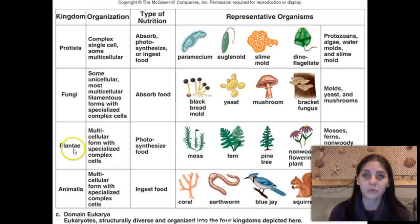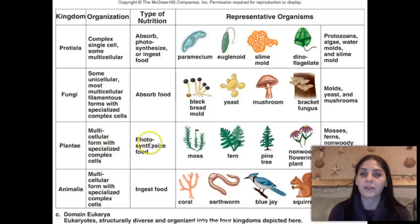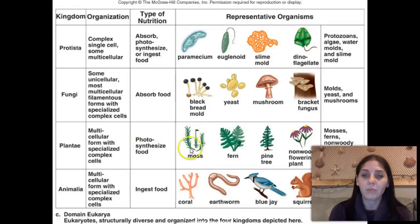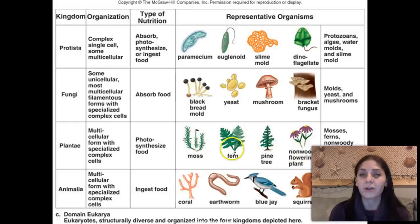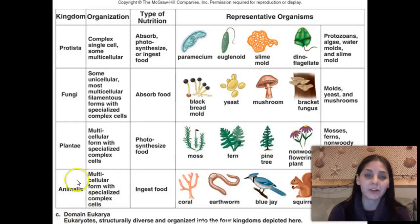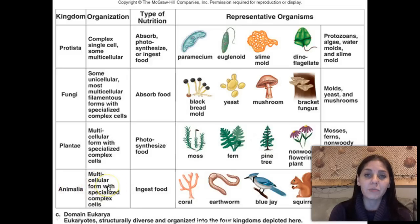Plantae is our next kingdom within domain Eukarya. Plants are multicellular, formed with specialized complex cells. They photosynthesize, meaning they are autotrophs that produce their own food. Mosses, ferns, different types of trees, and flowers are all examples of plants.